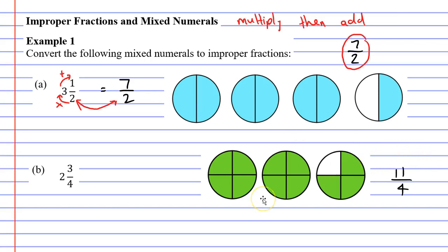All right so how would I do this without the diagram? Well we're going to use the same method we use in question a. We multiply the denominator by our whole number of 2 and then we add our numerator of 3 at the end.